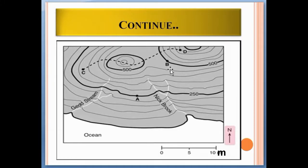As you can see, if you move from point A to point B the elevation is increasing, and if you move from point B to point A the elevation is decreasing. So that is all about contour lines.